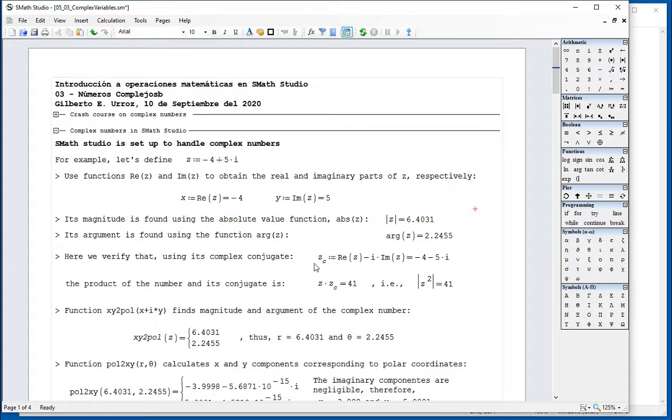The complex conjugate iconical is z sub z, because that bar is not easy to write in SMath Studio, in which we take the real part and the negative of the imaginary part. It's very simple to write. If you multiply z sub z times z, the number by its complex conjugate, you get number 41, which happens to be the magnitude of z squared.